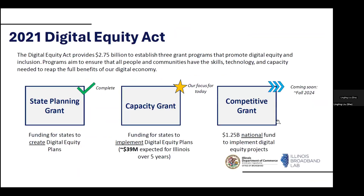A little context about the digital equity capacity grant: the Digital Equity Act of 2021 provides $2.75 billion dollars nationwide to establish three grant programs that promote digital equity and inclusion. These programs' goals are to ensure that all people and communities have the skills, technology, and capacity needed to benefit from our digital economy. The first grant is the State Planning Grant, which is already complete in Illinois — this was funding for states to create their digital equity plans. Illinois's state digital equity plan has been finalized, approved, and is currently posted on our website.